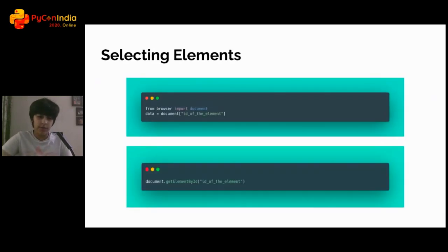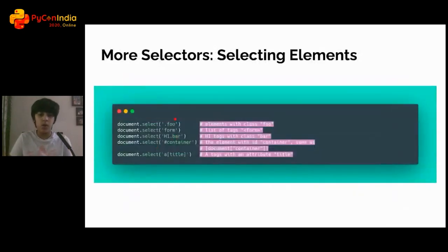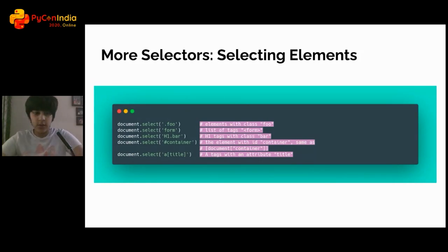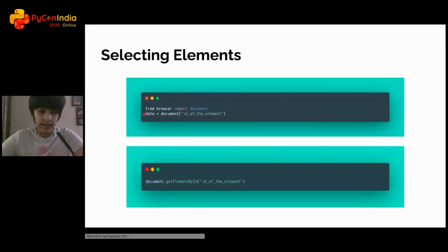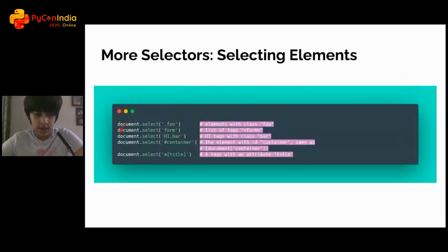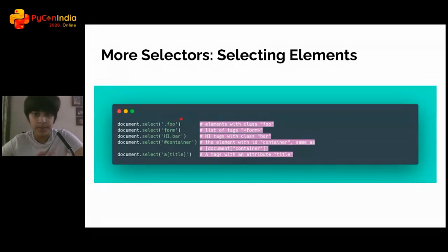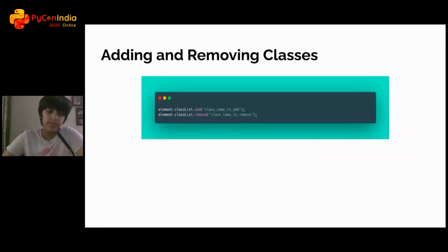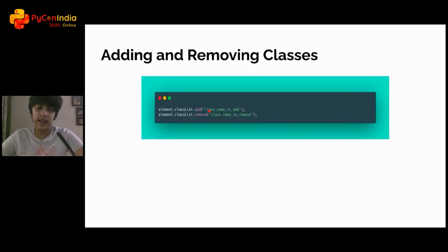Let's talk about more selectors, because selecting only by id would be a hassle in large-scale applications. We can use the select function: from browser import document, then document.select() and pass in any selector you want — like .foo, #container, a[title] — any CSS selector, jQuery selector, or normal HTML selector.